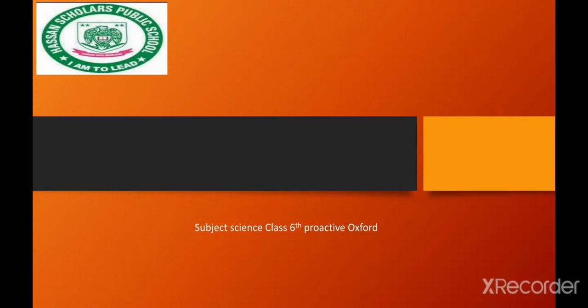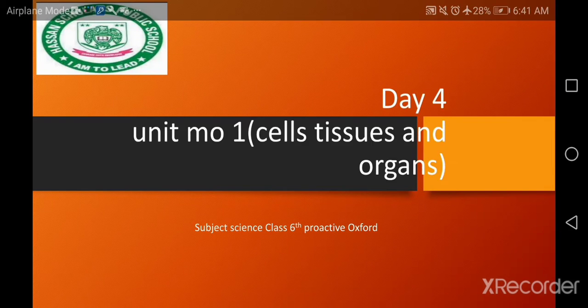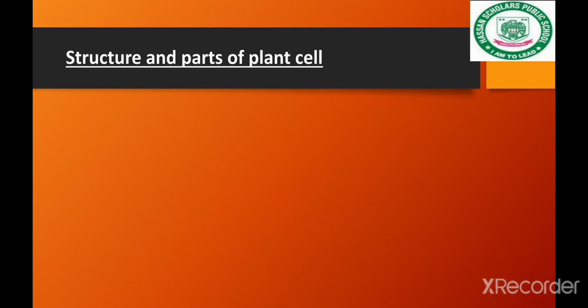Assalamu alaikum dear students. Today we will start Day 4 from Unit Number 1, and Unit Number 1 is cells, tissues and organs. We start our day with the structure and parts of plant cells.